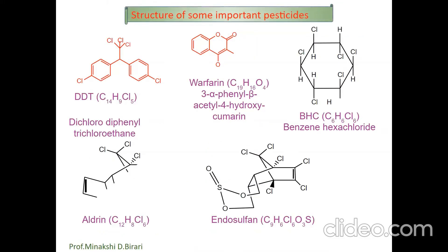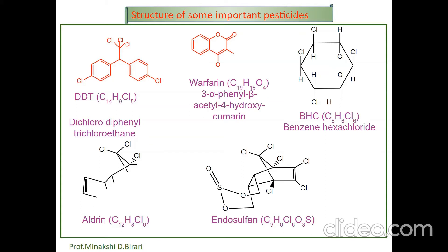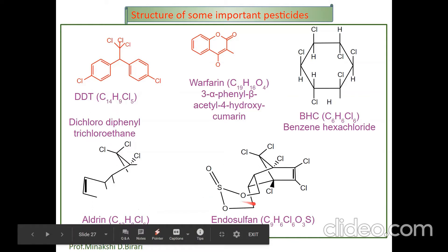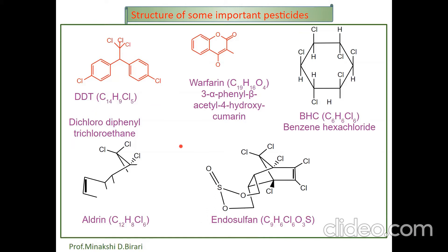First, here are the structures of some important pesticides. We know that pesticides are used to control pests and to increase crop yield. Most pesticides are used in agriculture to increase quality and quantity of crops. These are the structures of some important pesticides useful in agriculture: DDT (dichlorodiphenyltrichloroethane), BHC (benzene hexachloride), aldrin, and endosulfa.